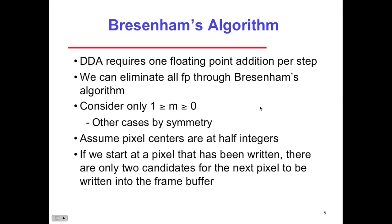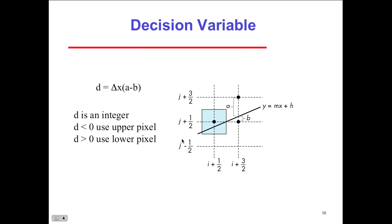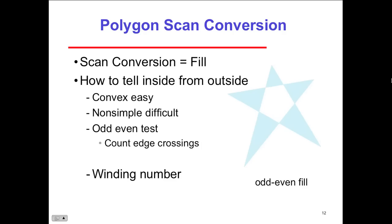Bresenham's algorithm came out after the DDA. The DDA required one floating-point addition per step; Bresenham's eliminates all floating-point operations by assuming pixel centers are at half-integers. Starting at the written pixel, there are only two candidates for the next pixel. We pre-determine which pixels to use next as candidates. Note that lines could pass through any part of a pixel — we just need to know which pixel. A decision variable picks which candidate pixel to populate. In incremental form, it uses only integer addition — single instructions on graphics chips, fewer calculations.